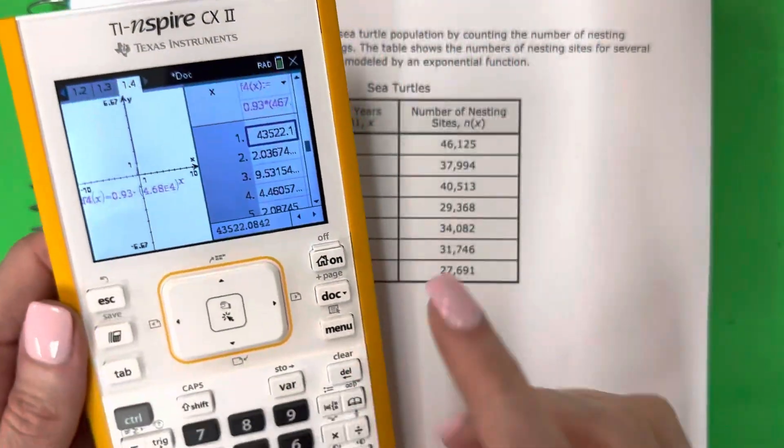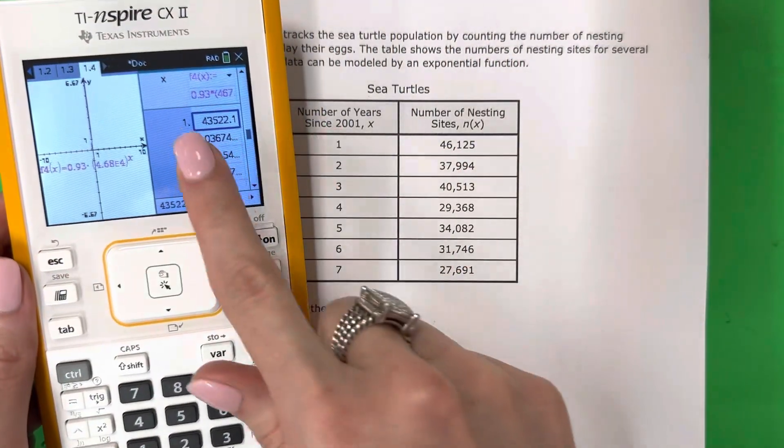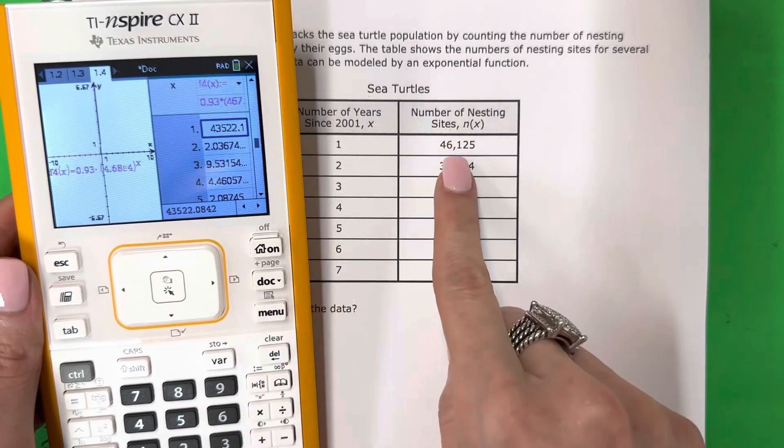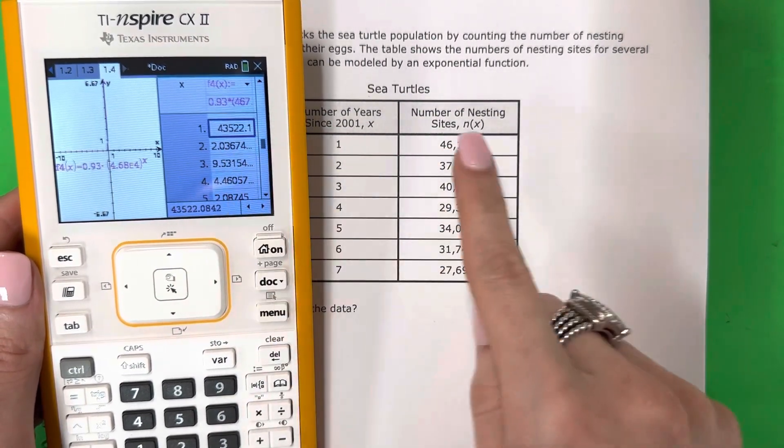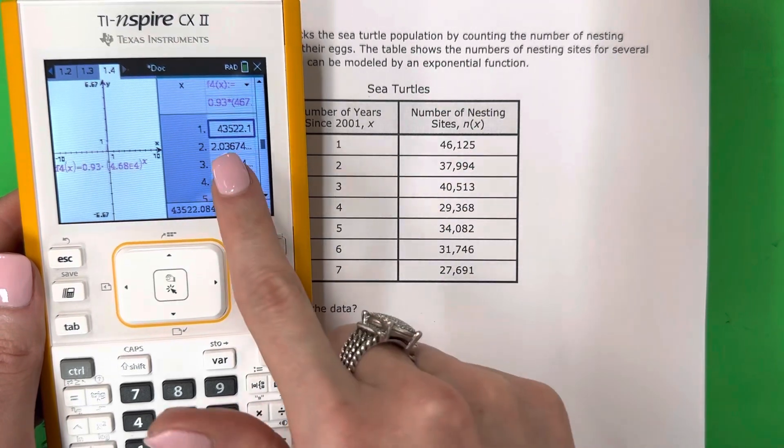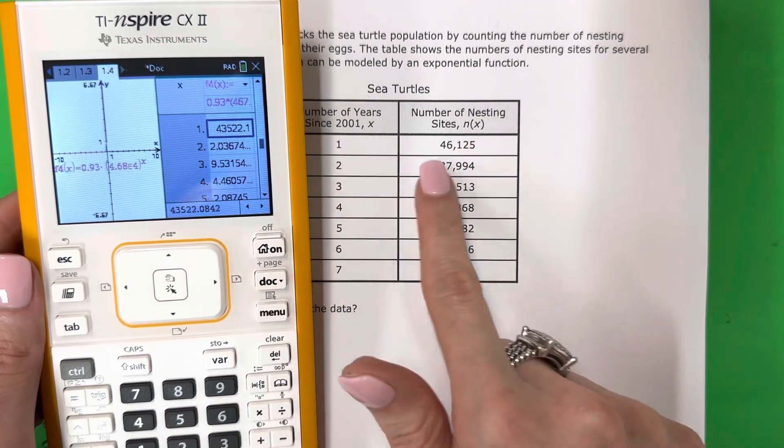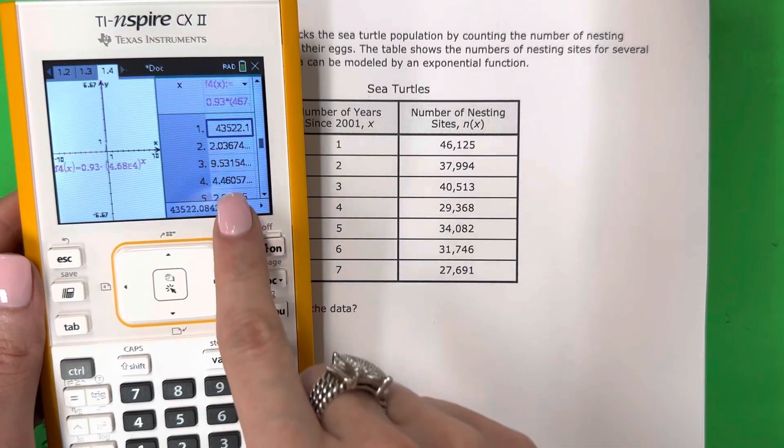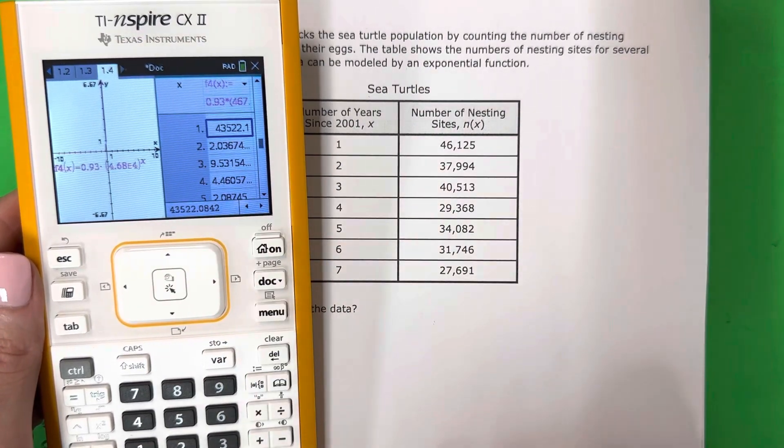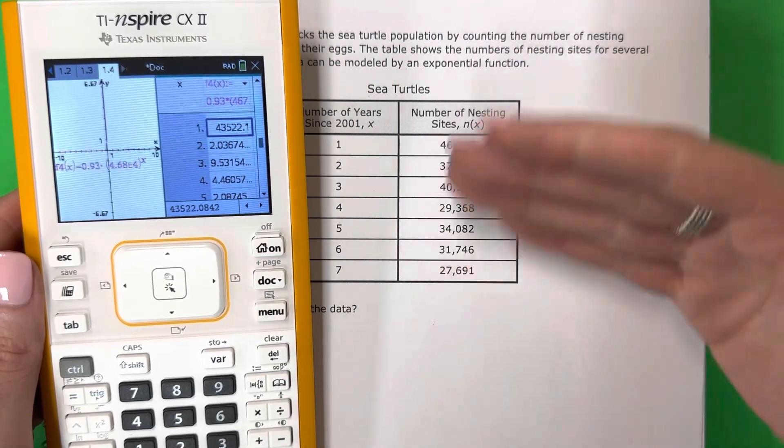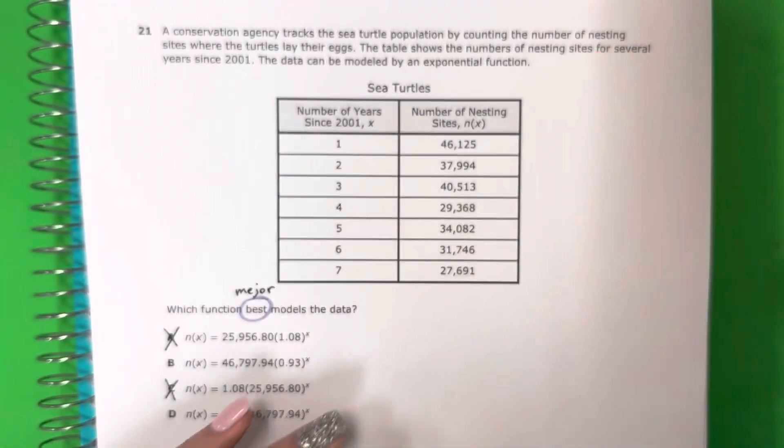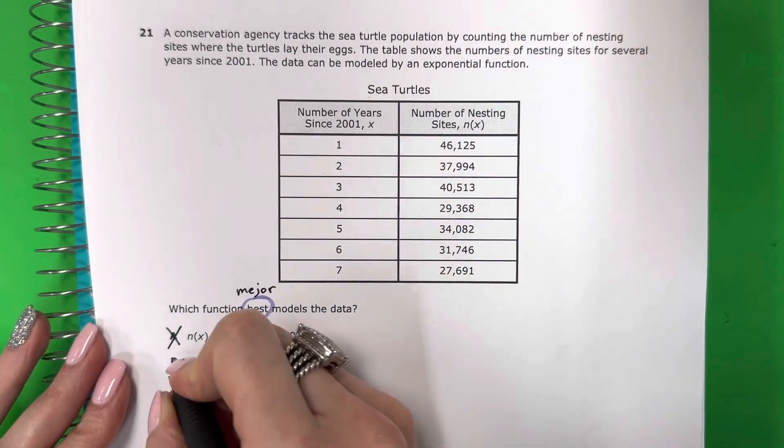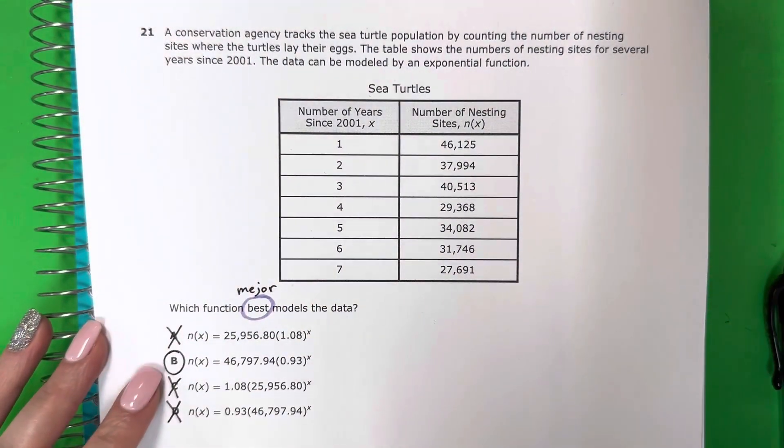Number one. That looks okay. Se mira bien. 43,000. 46,000. 43,000. 46,000. But then on the two, that looks bad. Mal. And then three. No good. No bueno. So only the first one is decent. Solamente la primera es decente. But I want all of them to be good. Pero quiero que todos son decentes. I want all of them to be decent. So my best one is the B. La mejor es la B.